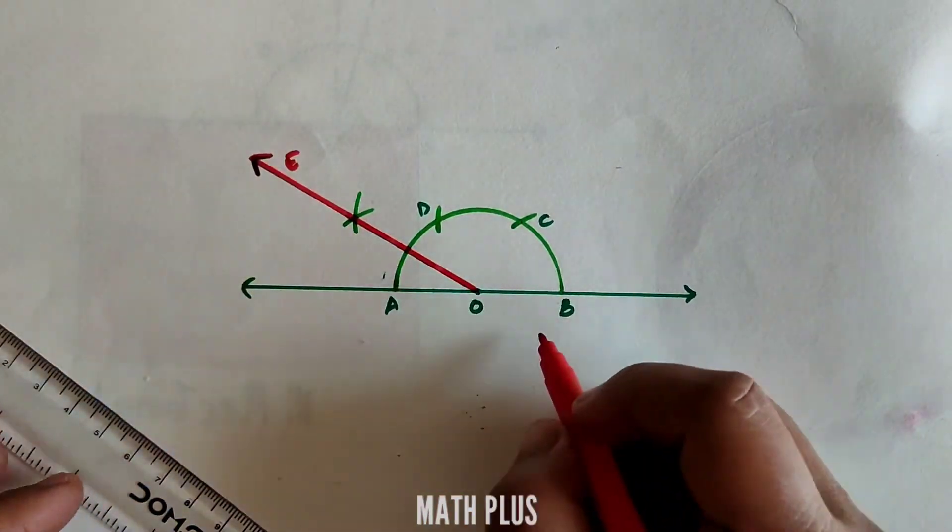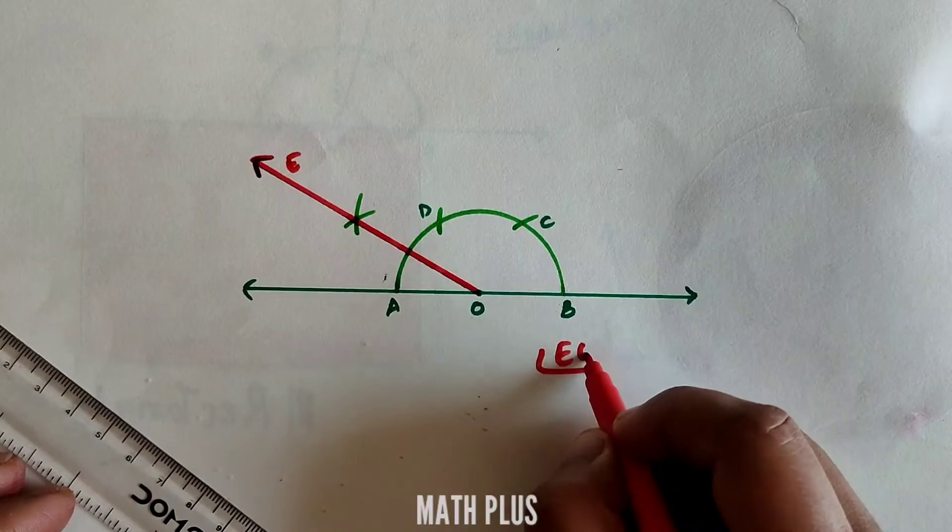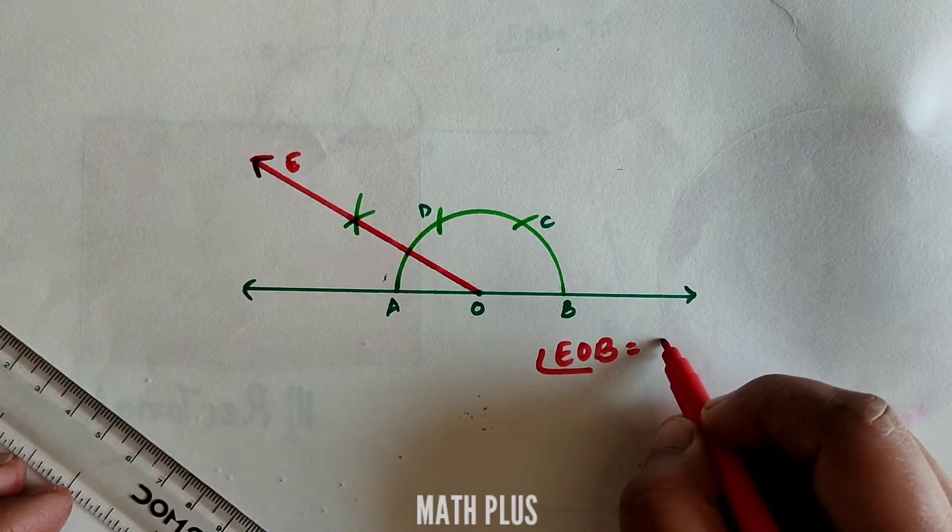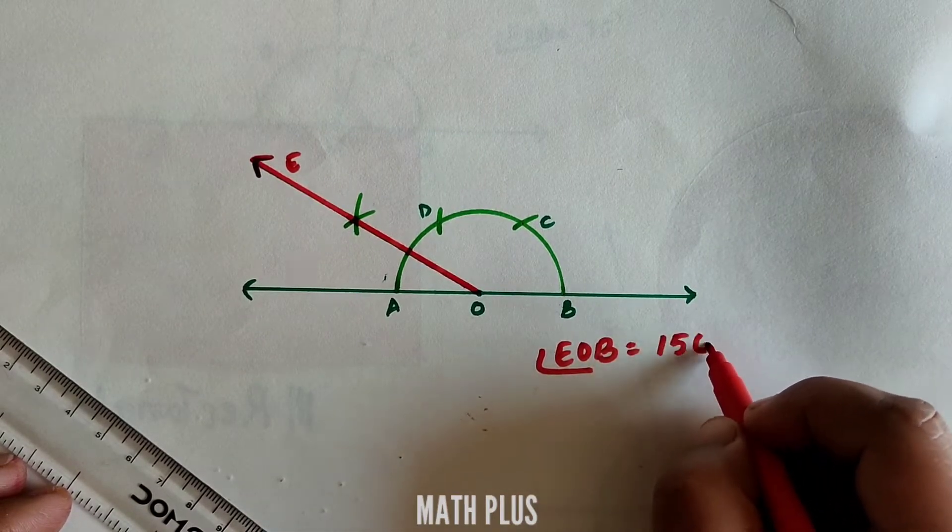Name the ray as E. Now angle EOB is an angle whose measure is 150 degrees.